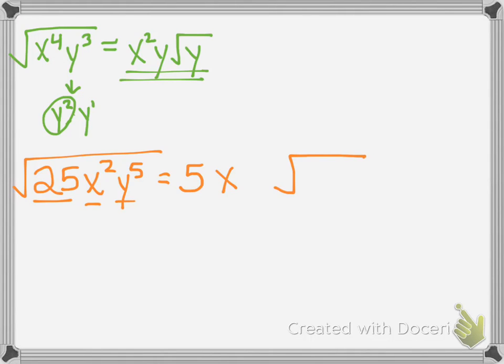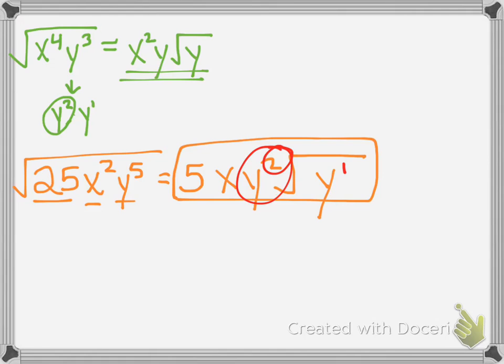Then, y to the fifth. Well, that is two sets of y to the seconds, so 2 can come out with one left over. Another way you can think of that y to the fifth is saying this. How many times does 2 go in the 5? Well, two times. How many are left over then? One. So it's left over under the radical. So you can think about it that way as well.